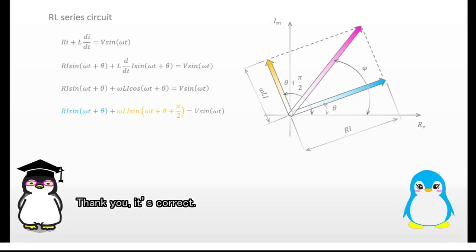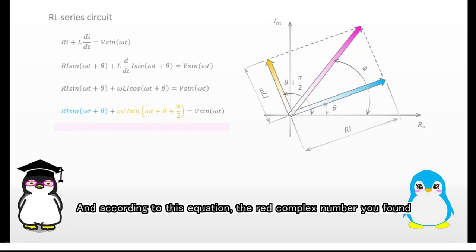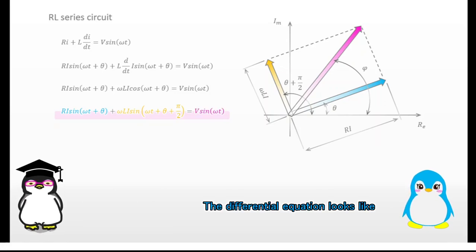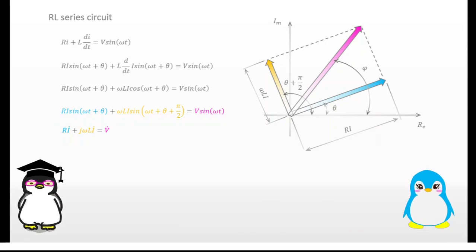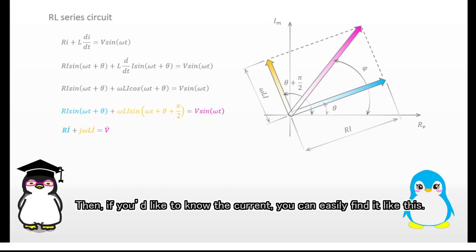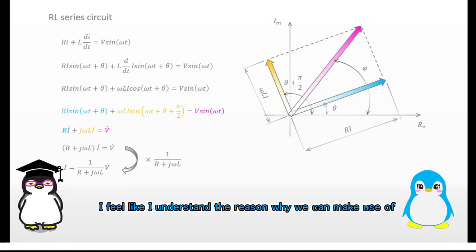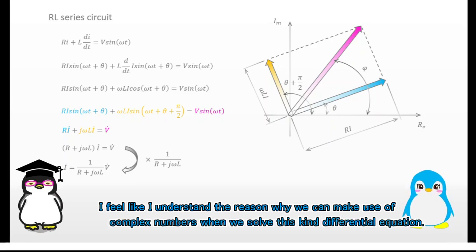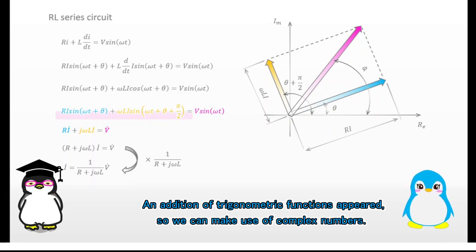Is this correct? Thank you, it's correct. The result of the addition is the red complex number, right? And according to this equation, the red complex number you found equals V sin(ωt). The differential equation looks like it has changed into just a complex numbers equation. Exactly. The equation has changed into just a complex numbers equation. Then, if you'd like to know the current, you can easily find it like this. I feel like I understand the reason why we can make use of complex numbers when we solve this kind of differential equation. The key point is this expression — an addition of trigonometric functions appeared, so we can make use of complex numbers.